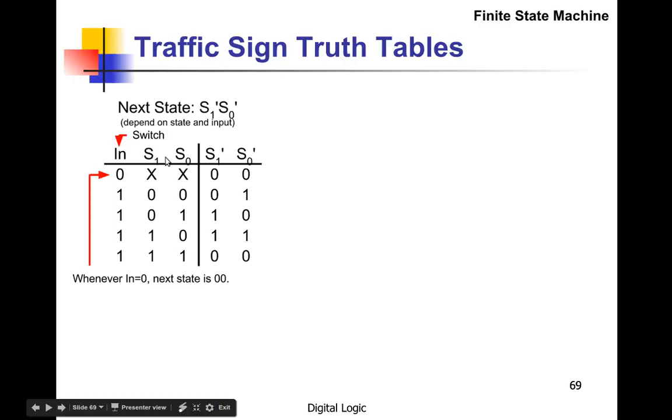We've got to figure out what the next state is. So let's start out—whenever the input is zero, it doesn't matter, we can have don't care on S1 and S0, we always want a zero out. So that's the first line there.